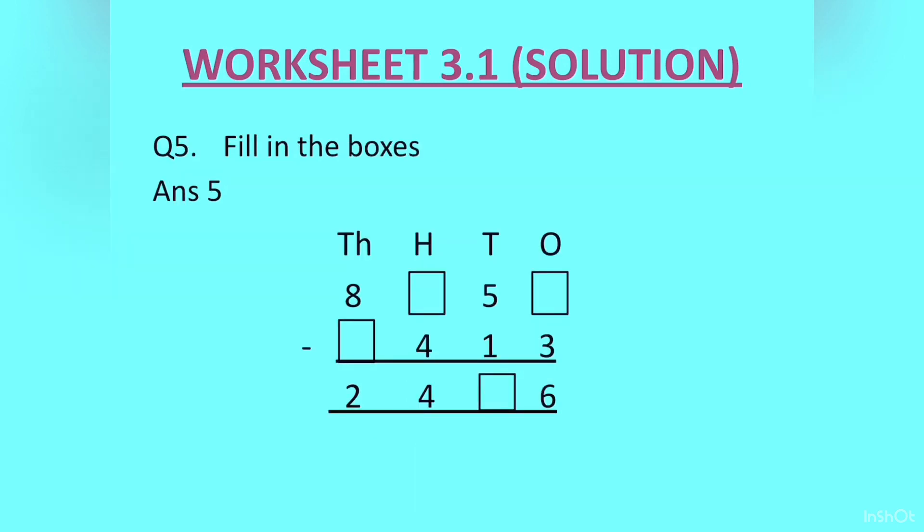Question 5: fill in the boxes. For this question we will start with the ones column. Dash minus 3 is equal to 6. So we will add 6 and 3 and we get 9 here. Then the next tens column we have 5 minus 1 which will give us 4.